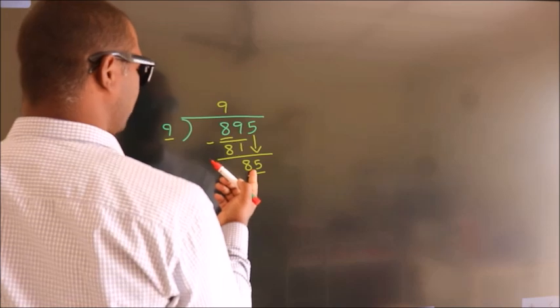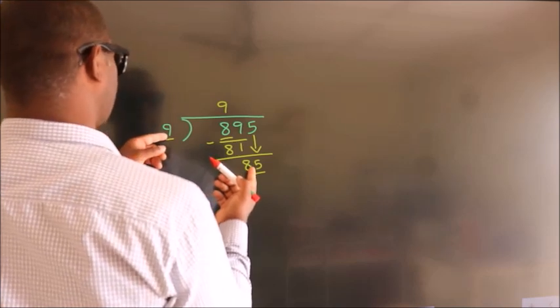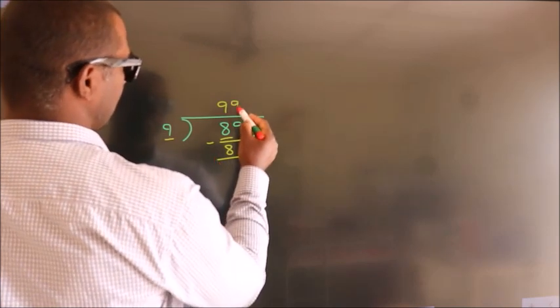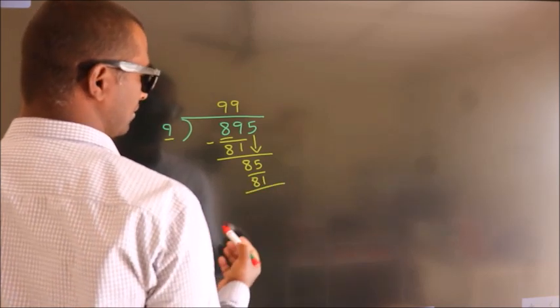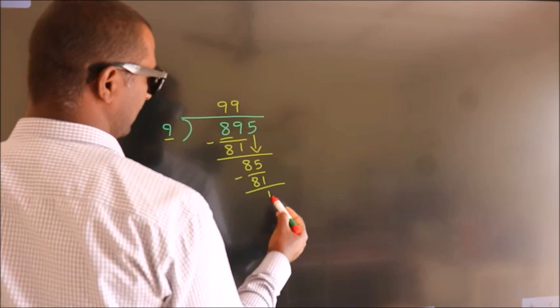A number close to 85 in 9 table is 9 9's 81. Now we subtract, we get 4.